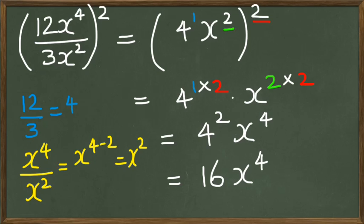You could do it the other way and write 12 squared over x to the power of 8, but when you work with bigger numbers, it gets difficult without a calculator. So it's probably easier to simplify inside the bracket first, and then work through.